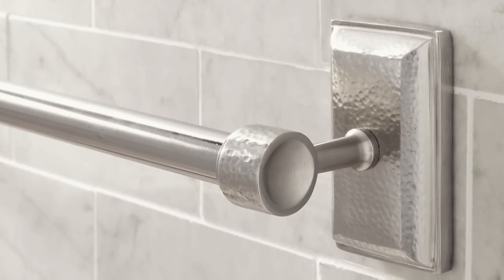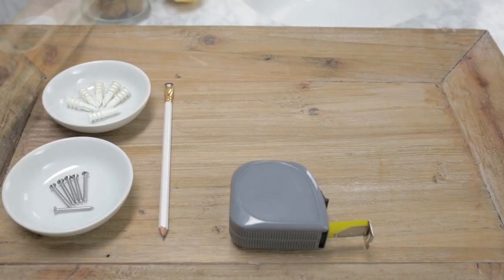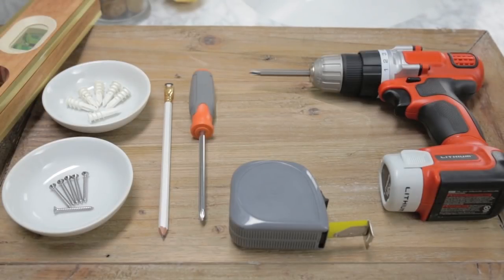Hanging a new towel rack is quick and easy. Along with your included hardware, you will need a pencil, a tape measure, a level, and a Phillips head screwdriver or drill.